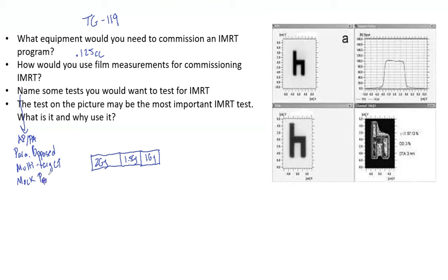Next we start talking about actual clinical cases — the easiest being a mock prostate. Put the chamber at isocenter, use film at mid-phantom, and actually treat a prostate plan. Then do a mock head and neck — notice we are getting more difficult the further down we go.